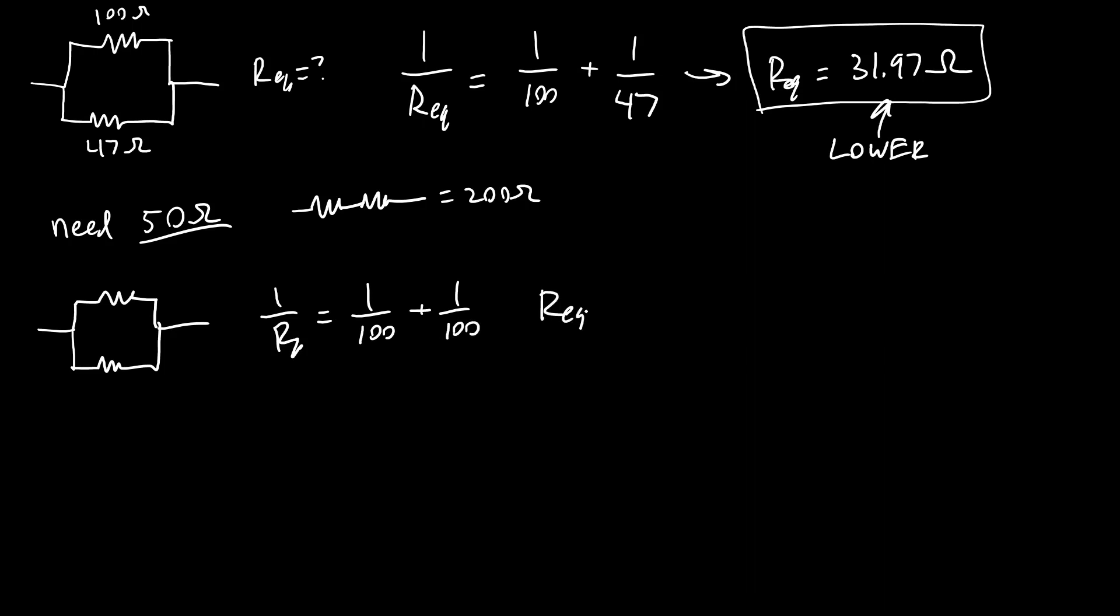And if you solve for Req in that case, you can get a 50 ohm resistor. So you can use your bag of 100 ohm resistors to get values that are both bigger and smaller than your individual resistor.